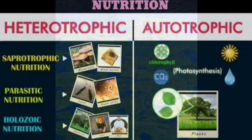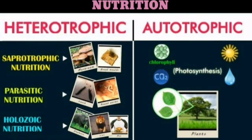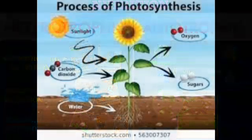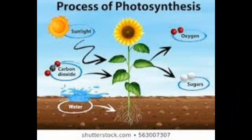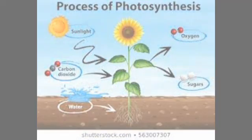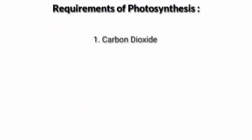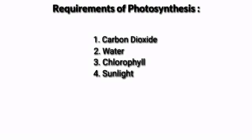Now let's focus on autotrophic nutrition in plants. It occurs by photosynthesis. Photosynthesis is the production of food by green plants in the presence of carbon dioxide, water, sunlight, and chlorophyll. Carbon dioxide comes from the stomata in the leaves. Water comes from the soil through the roots. Chlorophyll is present in the mesophyll cells of the leaf in the chloroplast. Sunlight provides the light energy.